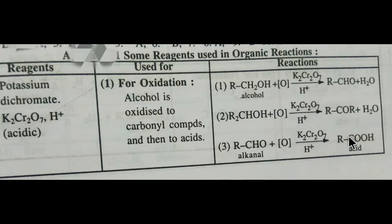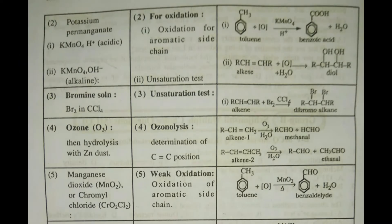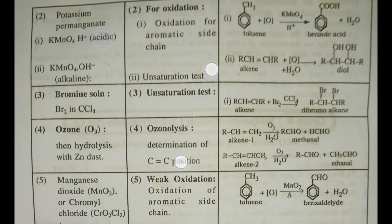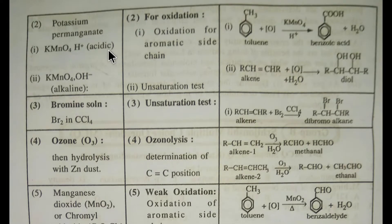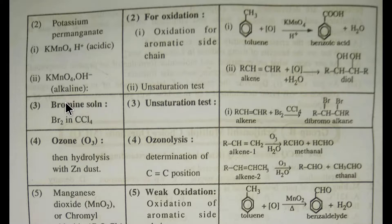Our second reagent is potassium permanganate. Potassium permanganate can be used in two conditions: one is acidic medium and the second is alkaline medium. In acidic medium, it is used for the oxidation of aromatic side chains.